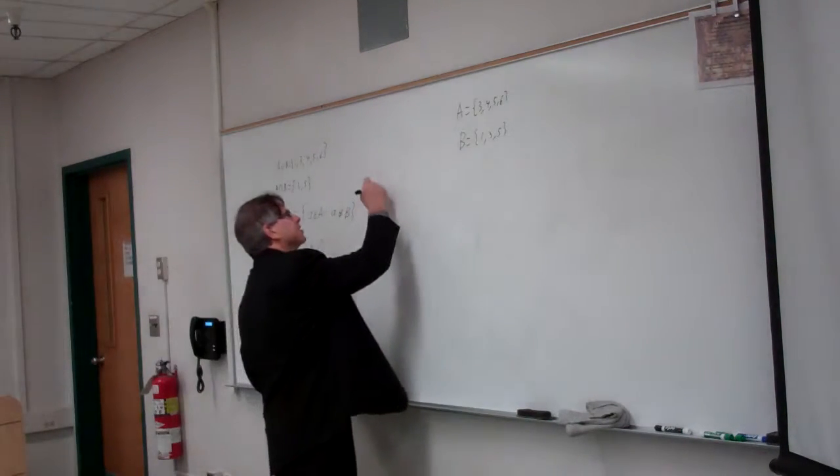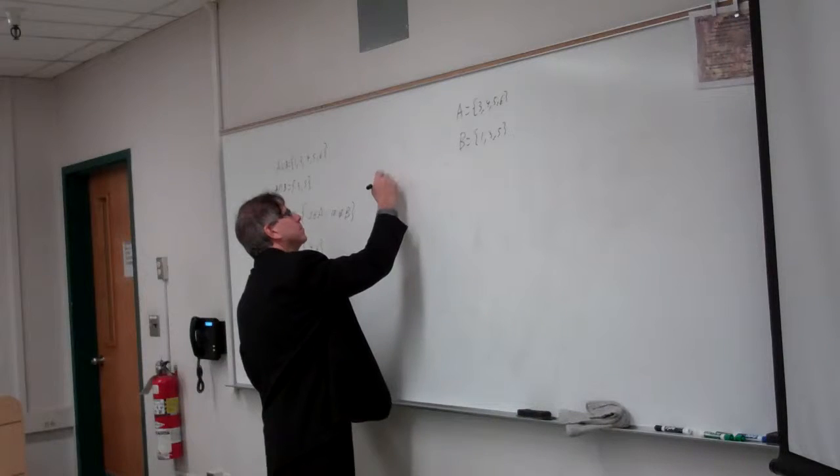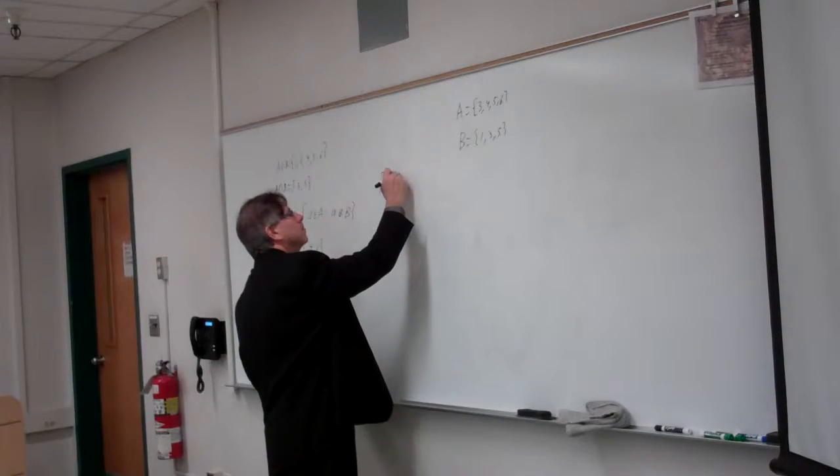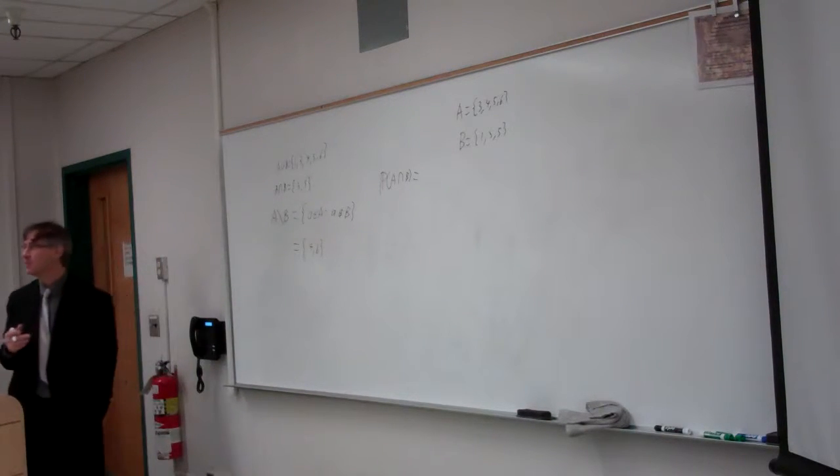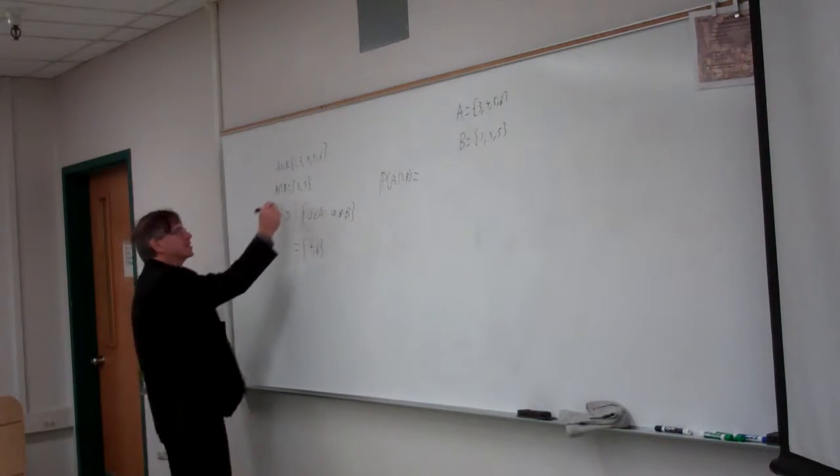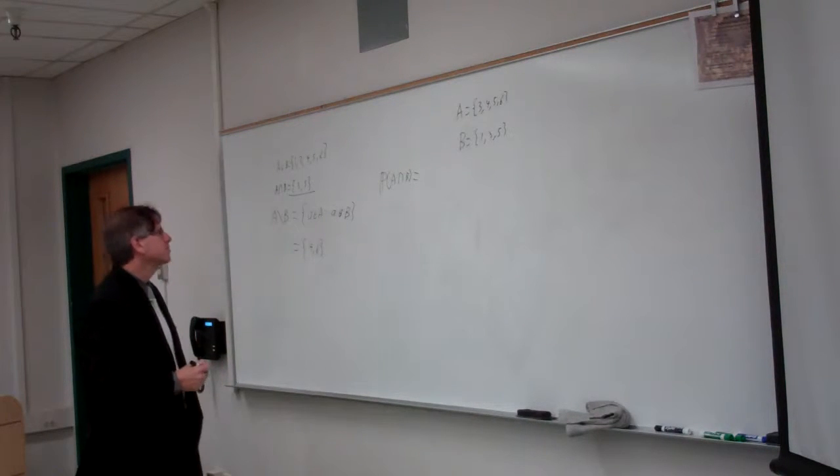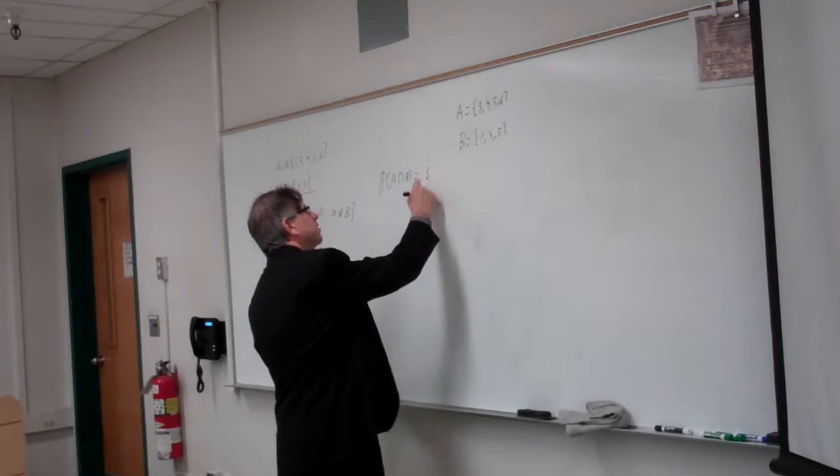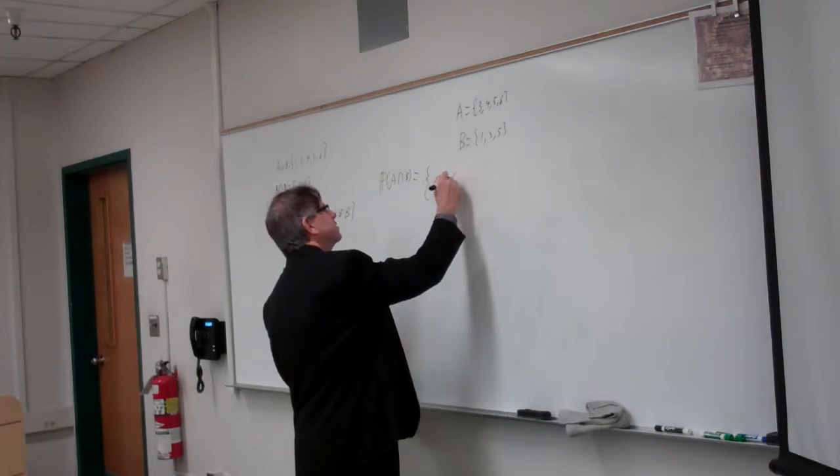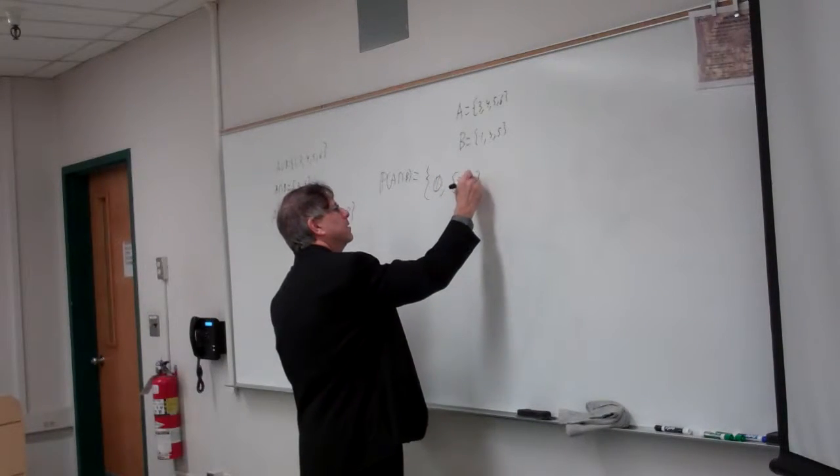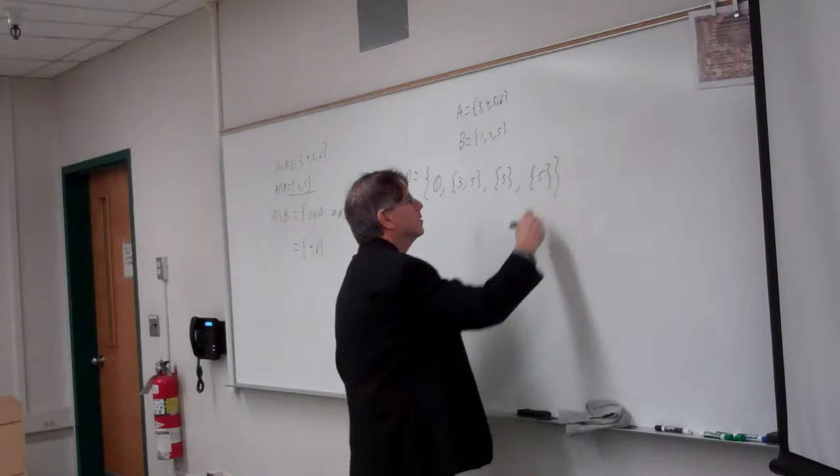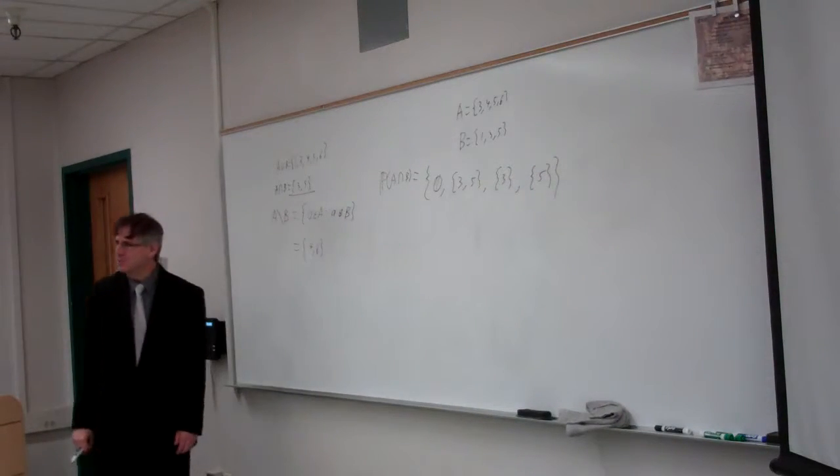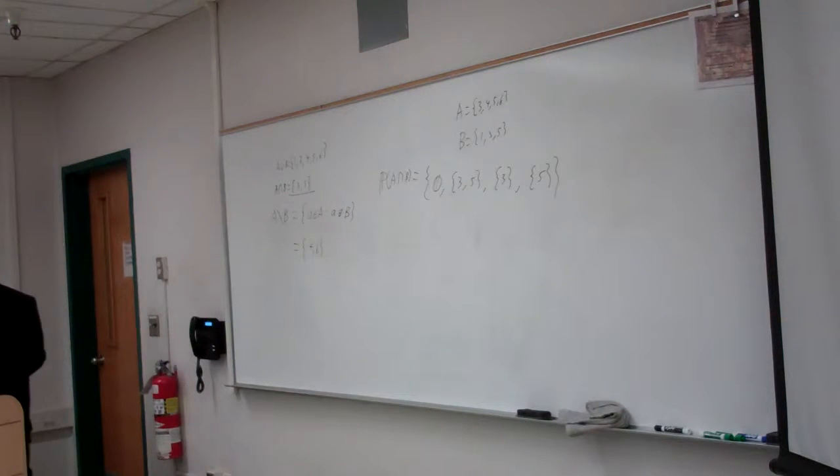And then power set of... The power set of any set is just a collection of all subsets of that. So if your intersection was this or if it was something different, it always includes the empty set, the set itself, and then each of the subsets. And as a check, it should always be 2 to whatever the size of the set is if the set's finite.